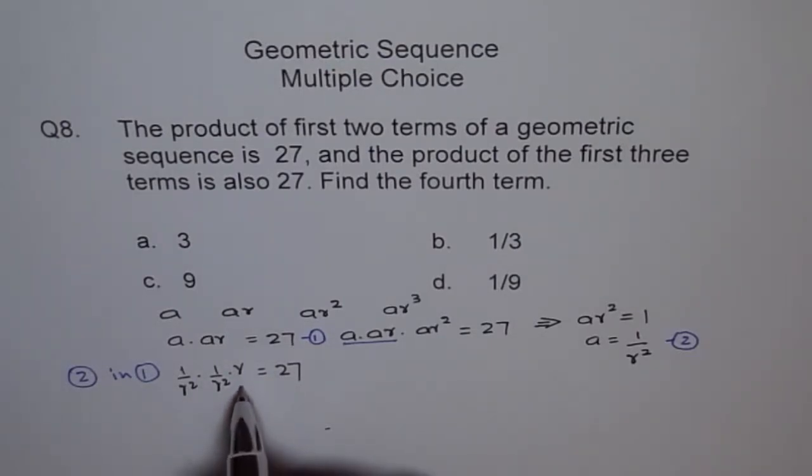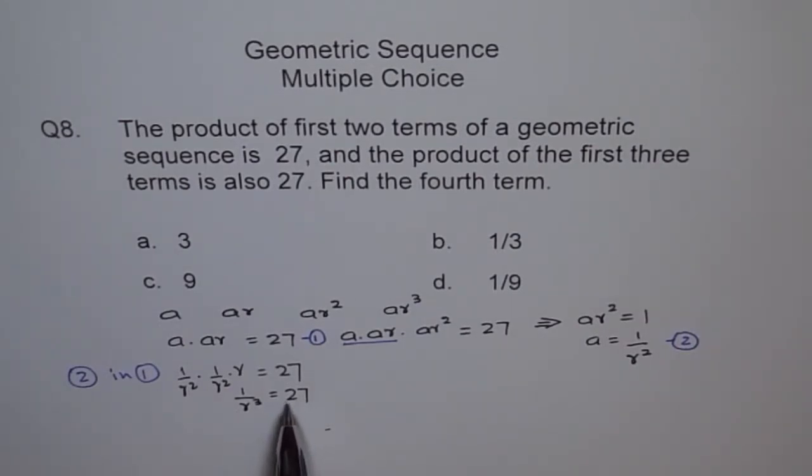Now here it means 1 over r cubed, right? This is 4 and 1 to get 2 equals 27. Now if I write this as cube, if I can write this as some cube, which is 3 cube, then I can compare this.